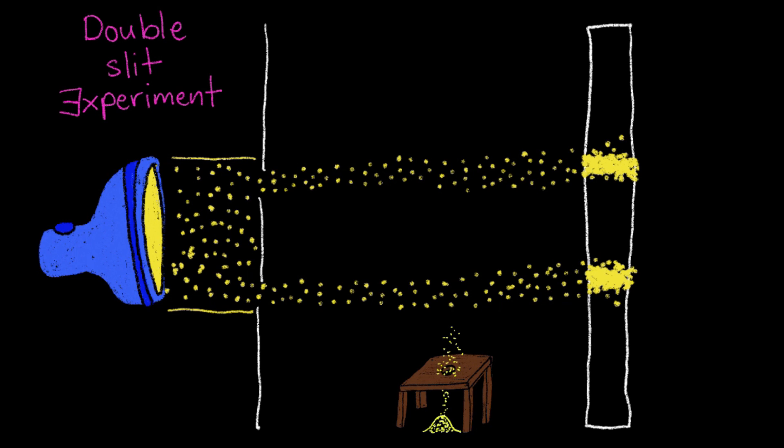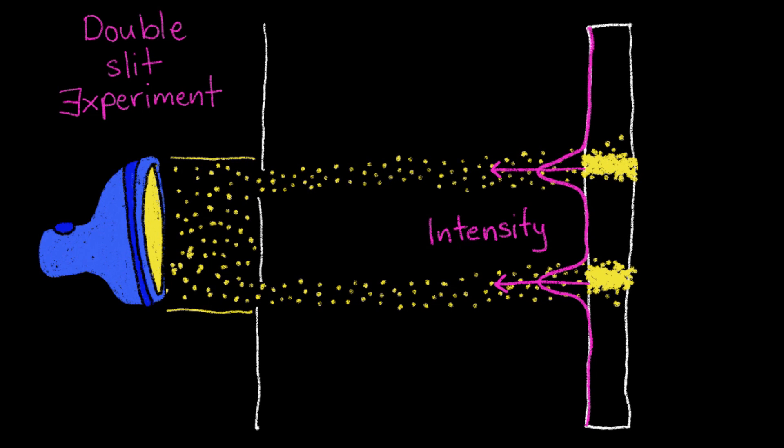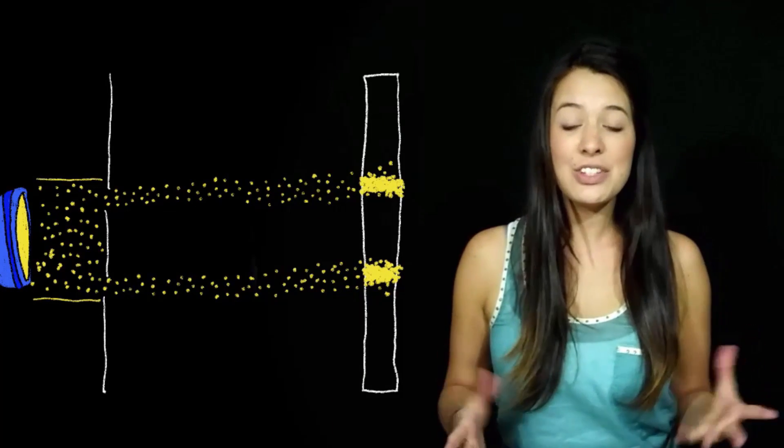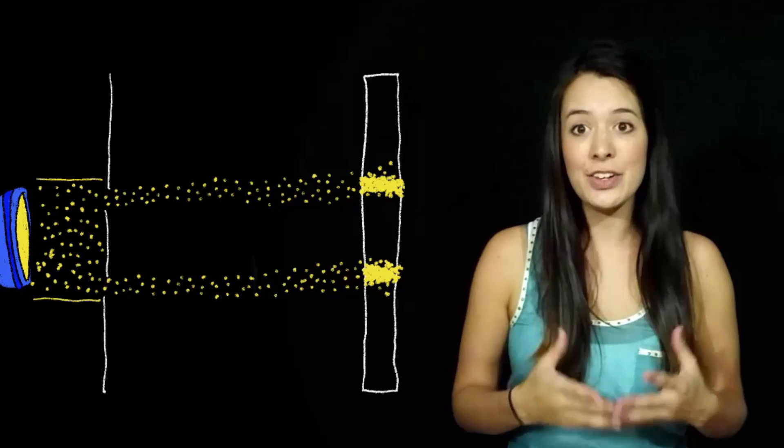Well, because light doesn't really make a mound, where the most light is hitting is going to show up as the brightest spot on the detection plane, or have the highest intensity. So if light were a particle slash corpuscle, we should see these two bright spots of high intensity on the detection plane, right? Well, that's not what happened. What Young saw on the detection plane instead was this.